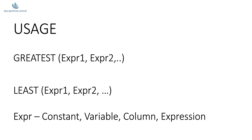All these expressions can either be a constant value, a variable, a table column, or an expression themselves. When a series of such expressions are passed to the greatest or the least function, the function does a comparison among the passed values and returns the greatest value in the case of the greatest function and the least value in the case of the least function. So this is a function applied over multiple columns, comparing values across columns in each row and returning the largest or the smallest depending on the type of function.